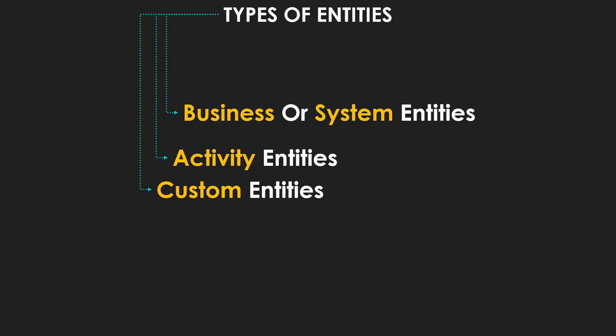When we talk about activity entities, these are associated with multiple business records. For example, emails, tasks, appointments, etc.